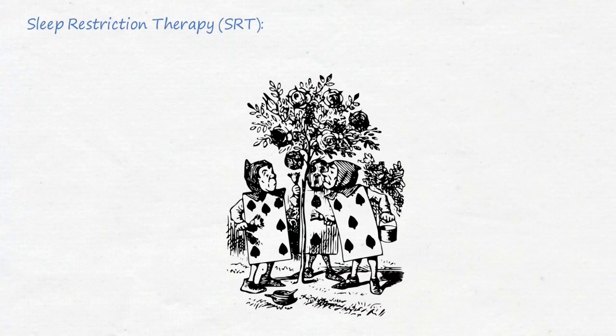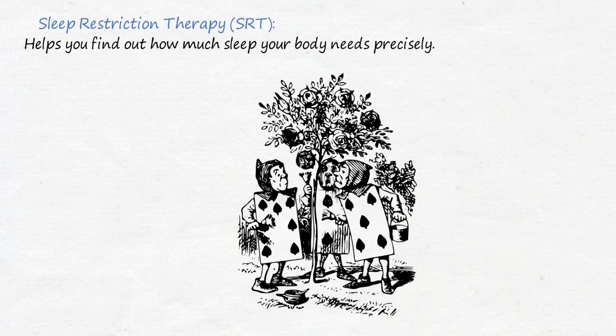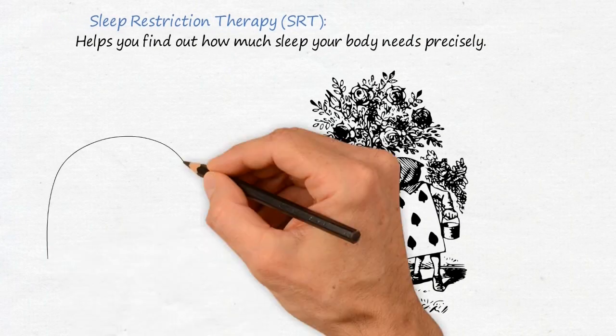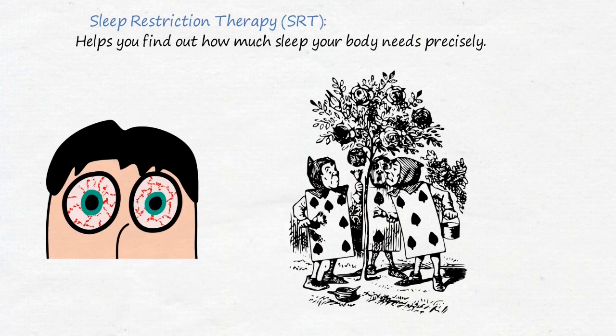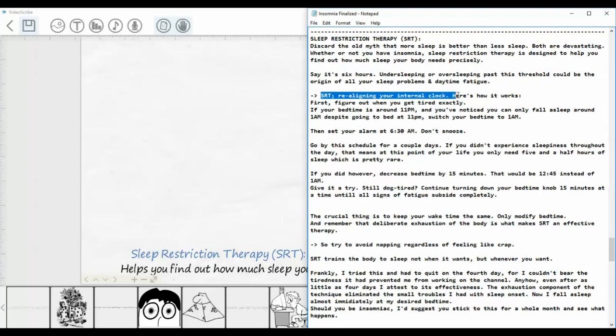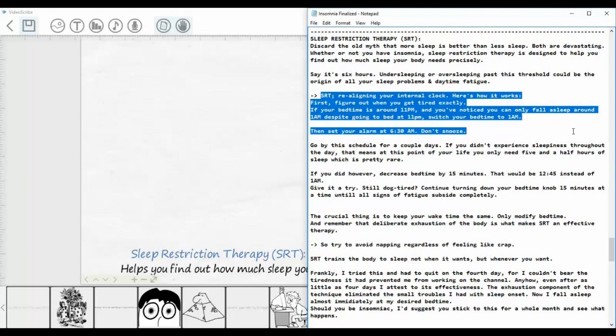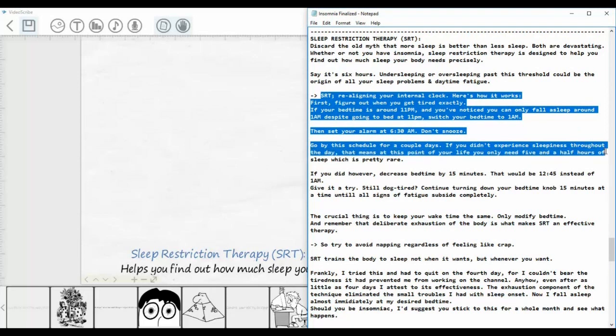Discard the old myth that more sleep is better than less sleep. Both are equally devastating whether or not you have insomnia. Sleep restriction therapy is designed to help you find out how much sleep your body needs precisely. Say it's six hours, under sleeping or oversleeping past this threshold could be the origin of all your sleep problems and daytime fatigue. SRT realigning your internal clock. Here's how it works: first figure out when you get tired exactly. If your bedtime is around 11 pm and you've noticed you can only fall asleep around 1 am despite going to bed at 11 pm, switch your bedtime to 1 am, then set your alarm at 6:30 am. Don't snooze.